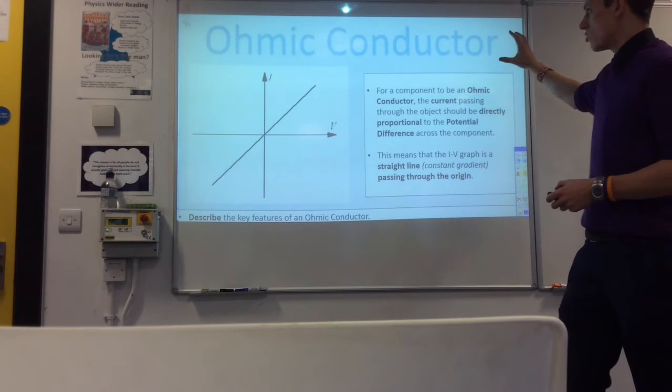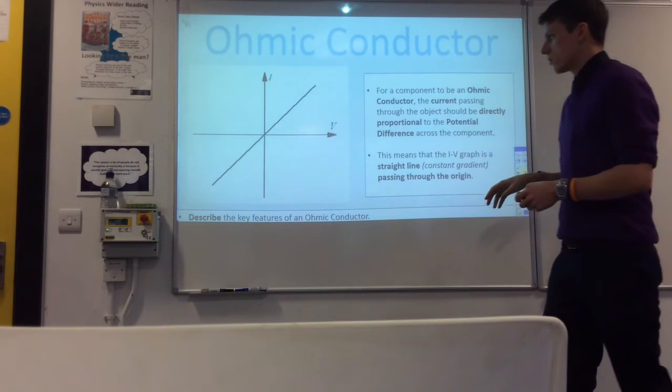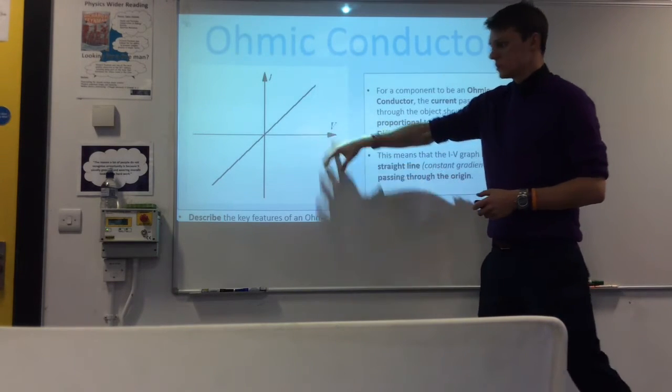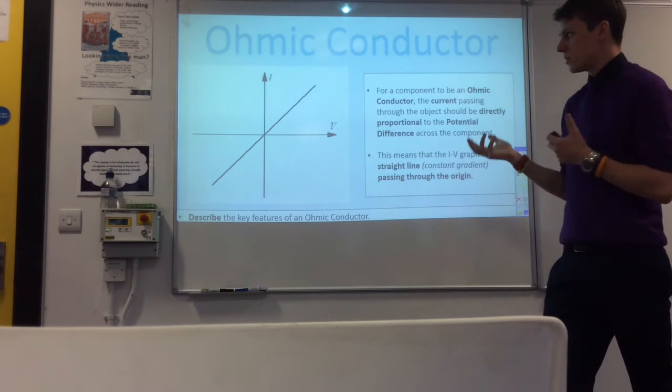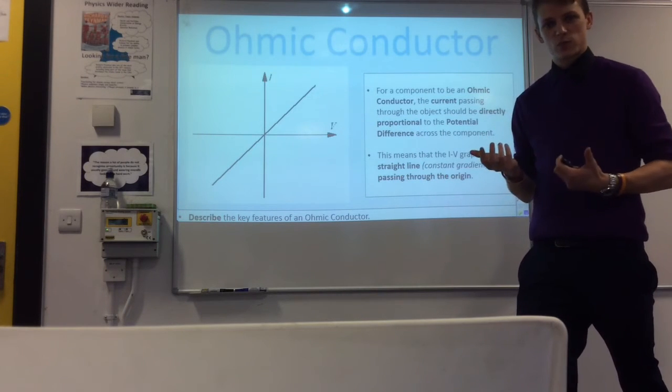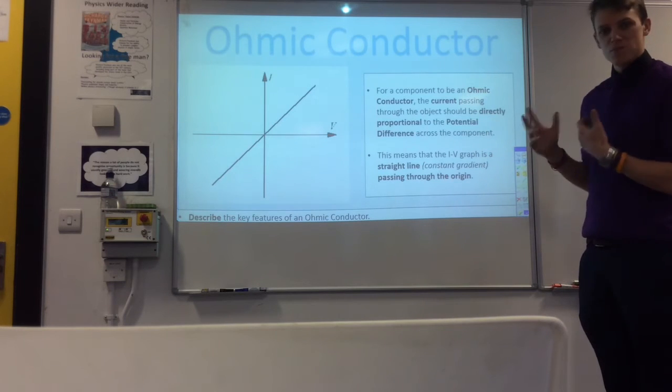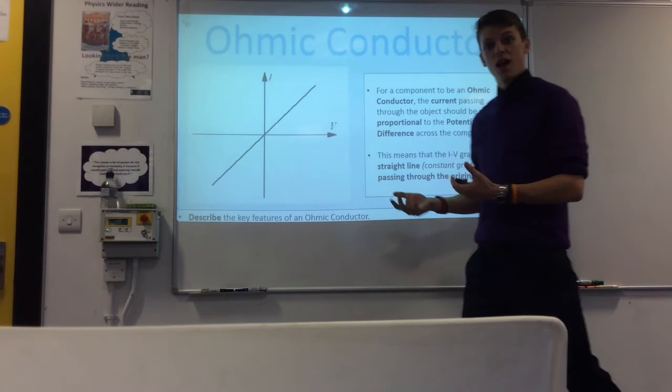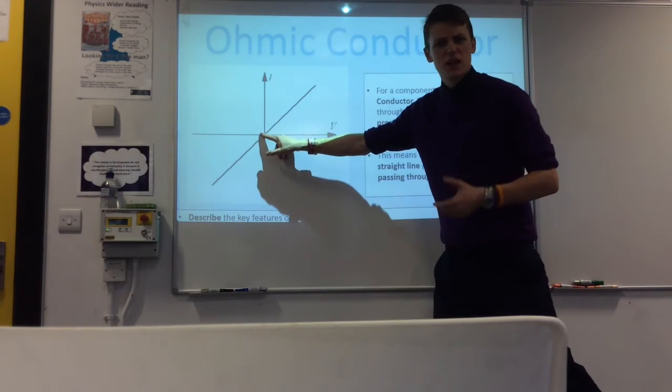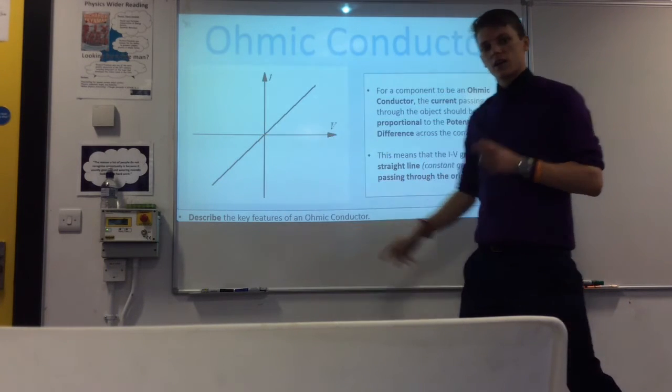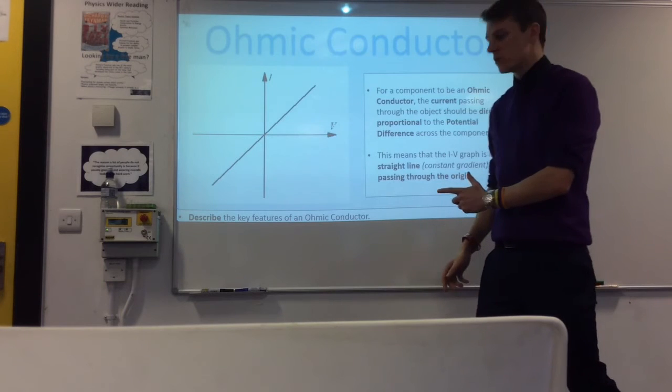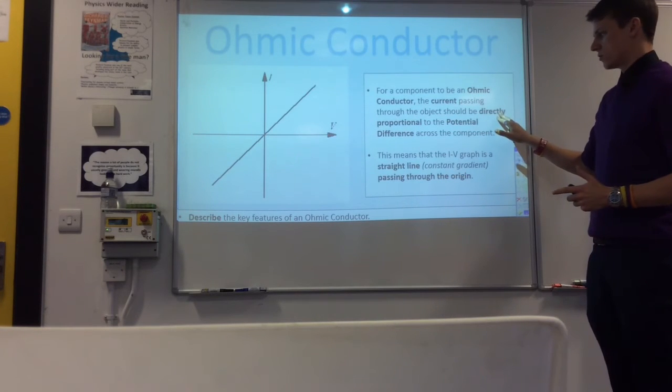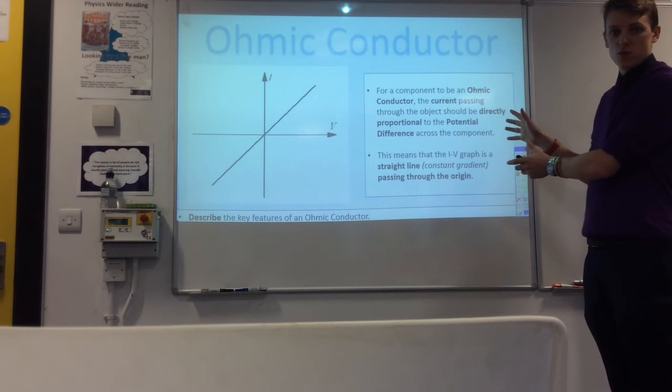So let's start with an ohmic conductor. So this is the graph we were looking at before. So an ohmic conductor is one in which the current and the potential difference are directly proportional to each other. And what that means is the graph of them is a straight line, so a constant gradient, and it passes through the origin. That's the part a lot of people will forget. Straight line and going through the origin, that makes a directly proportional relationship. That's an ohmic conductor.